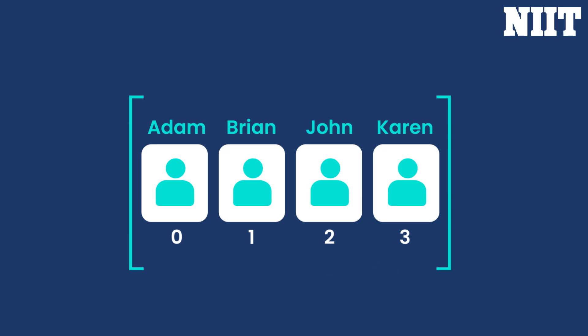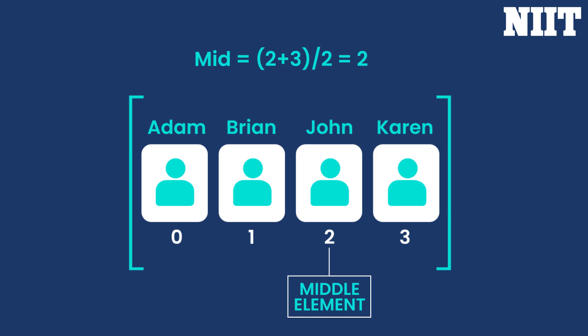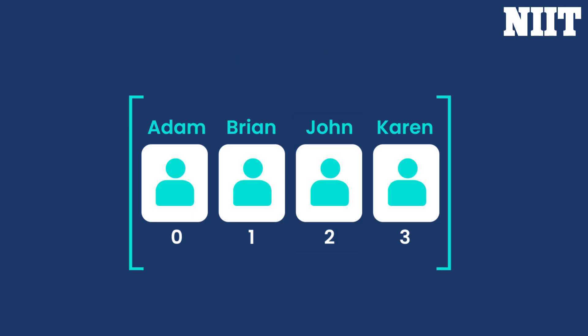Again, we will find the middle element in the right-most list. Here, the lower bound is equal to 2 and the upper bound is equal to 3. The index of the middle element is 2. The element at index 2 is John, which is the desired element. Therefore, the element is found at index 2 in the given list.